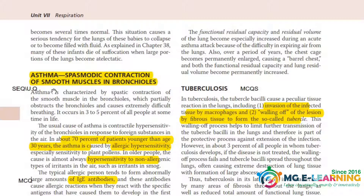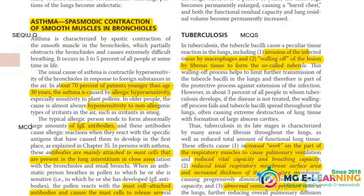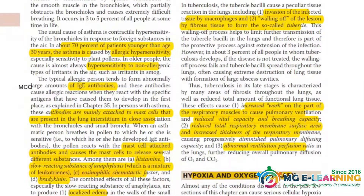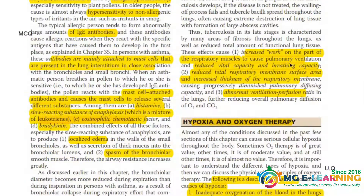Next is asthma. Asthma is a past UQ — a very important question — and it also has important points for MCQs; I have highlighted all the MCQ points. Then there is TB. TB is important for MCQs only, and the MCQ points are highlighted.